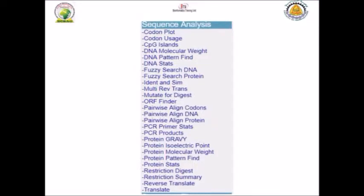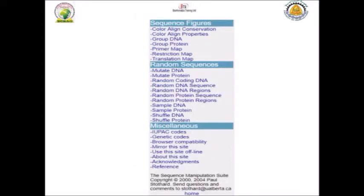The second section is called Sequence Analysis, and this is the most commonly used section in bioinformatics. It includes tools like Codon Usage, Codon Usage Plot, and CpG Island. Some tools are for DNA and some for protein, making it very useful for molecular biologists.